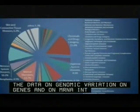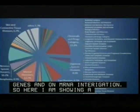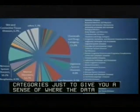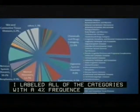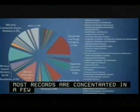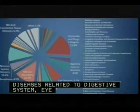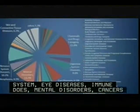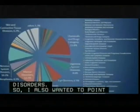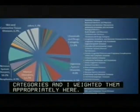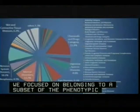A distribution of the SNP association results across broad phenotype categories is shown. As seen in the pie chart, most records are concentrated in just a few categories, including chemicals and drugs, digestive system diseases, eye diseases, immune system, mental disorders, nervous system disorders, cancers, and skin and connective tissue disorders. Some associations can belong to multiple trait categories, weighted appropriately, reflecting what is seen in both the GWAS catalog and submissions to dbGaP.